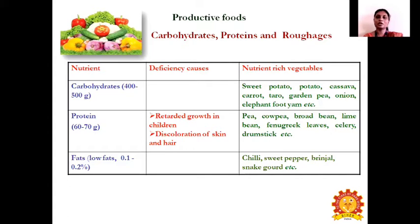Deficiency of protein content leads to retarded growth in children, marasmus, and skin and hair problems. Low-fat vegetables — those containing about 0.12 to 0.2 percent fat — include chili, sweet pepper, brinjal, and snake gourd.